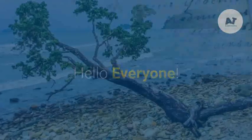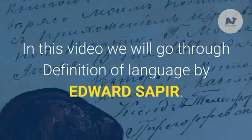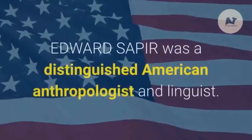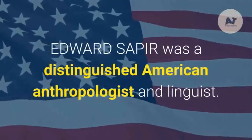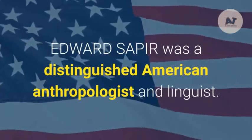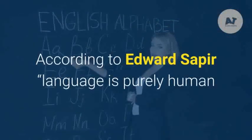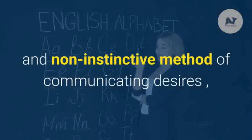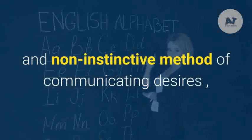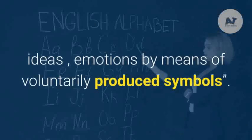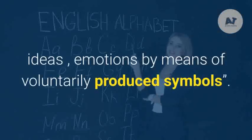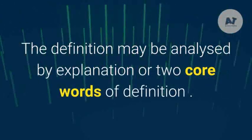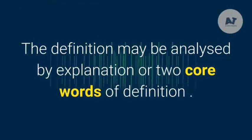In this video we will go through the definition of language by Edward Sapir. Edward Sapir was a distinguished American anthropologist and linguist. According to Edward Sapir, language is a purely human and non-instinctive method of communicating desires, ideas, and emotions by means of voluntarily produced symbols. The definition may be analyzed by explanation of two core words: human and non-instinctive.